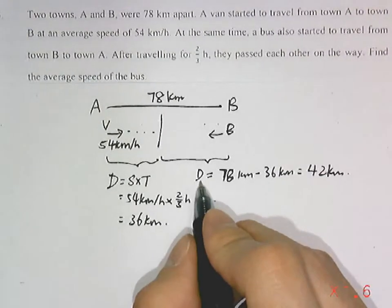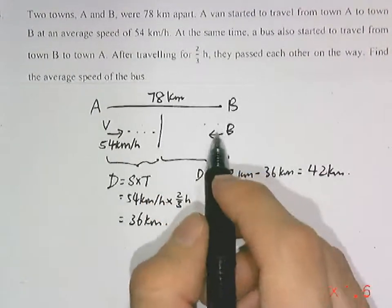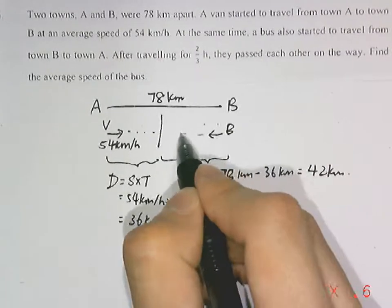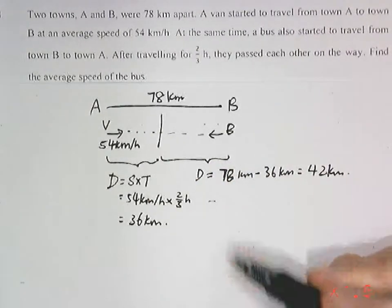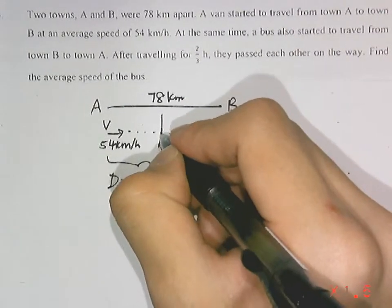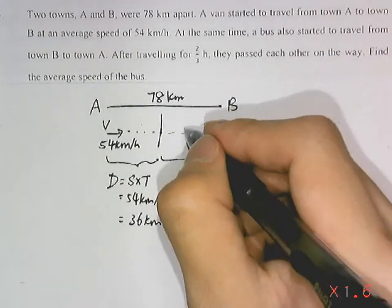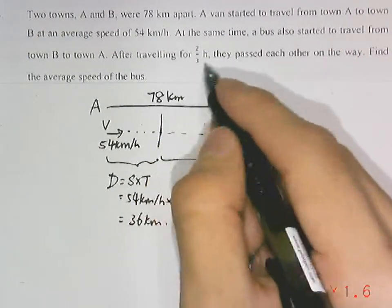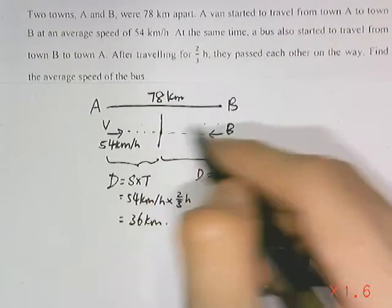We have the distance traveled by the bus. As we can see, they will both meet at this meeting point after 2/3 hours. So the bus also traveled 2/3 hours, because this represents the time taken for both vehicles.